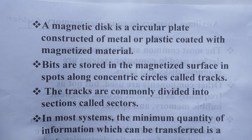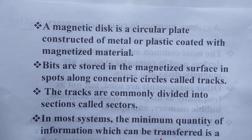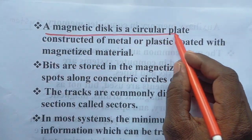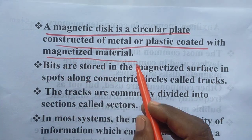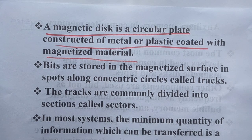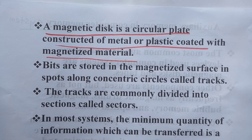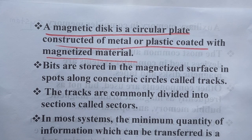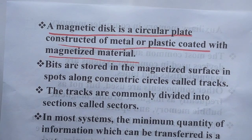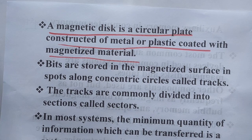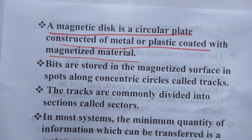The disk is constructed of metal or plastic coated with a magnetized material. Because it is magnetized, whenever it receives some data through electronic media, it will be printed. It is an electronic device which receives data in the form of 0 or 1, and the magnetized material stores different electronic data.